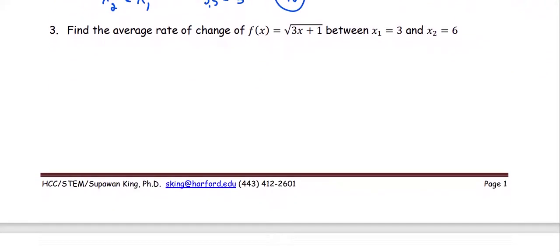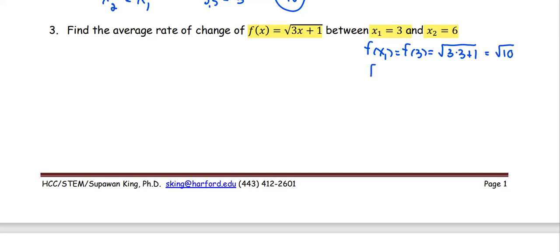Let's see one more example. The function is square root of (3x plus 1), where x1 is 3 and x2 is 6. We compute the function at x1, which is f(3). Replacing in the function, we get square root of (3 times 3 plus 1), which is square root of 10. Then the function at x2, f(6), gives us square root of (3 times 6 plus 1). That's 18 plus 1, which is 19, so square root of 19.